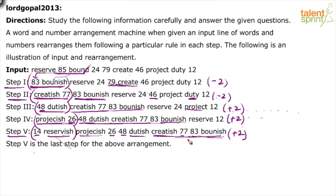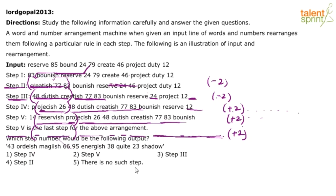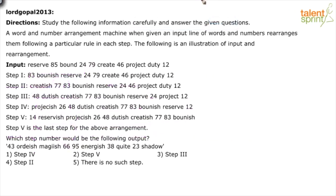If you follow all these conditions you get the desired output. Given a new input, you can copy the same process to get the required output. Looking at practice questions: one question asks which step number a given arrangement corresponds to. Even without the input, this can be answered.